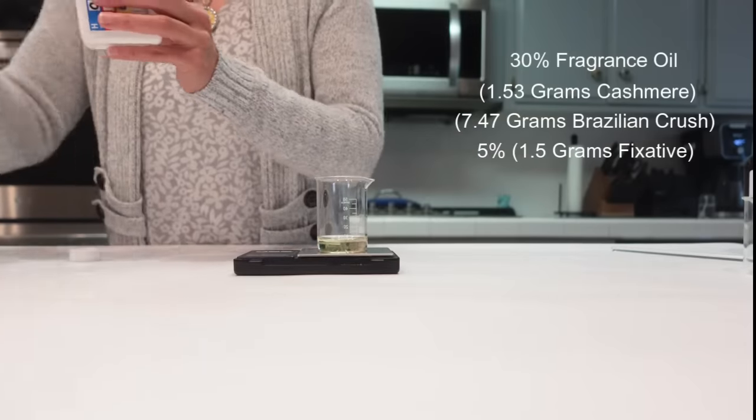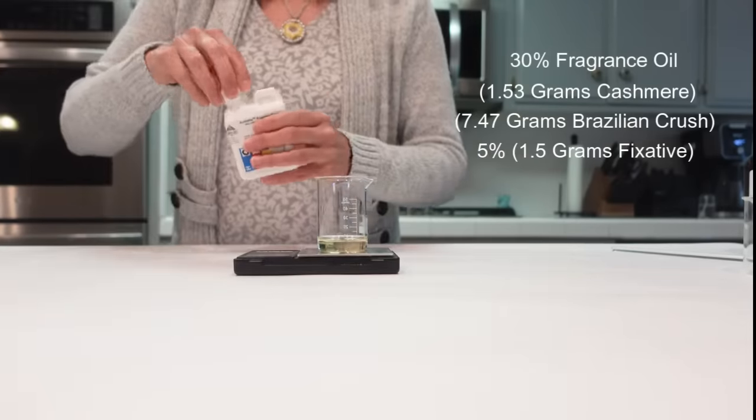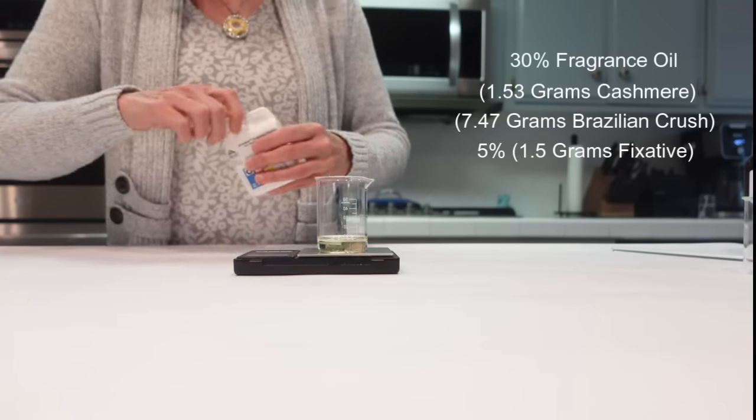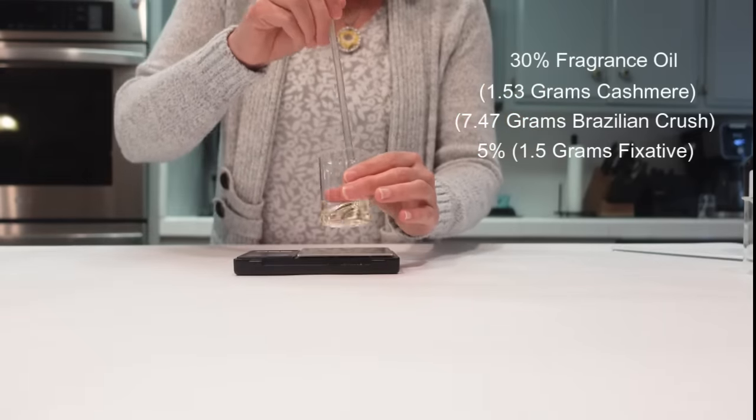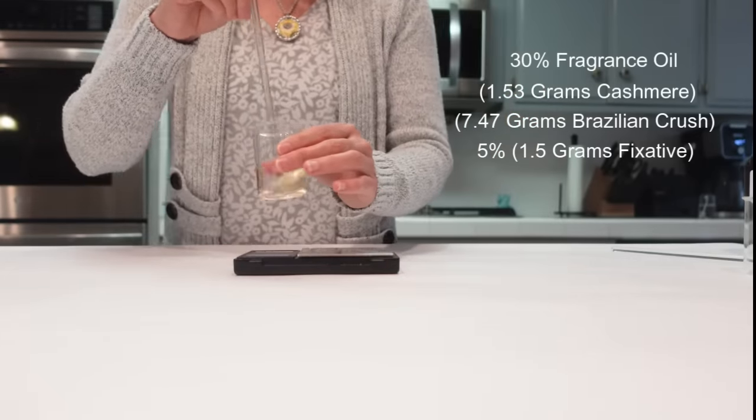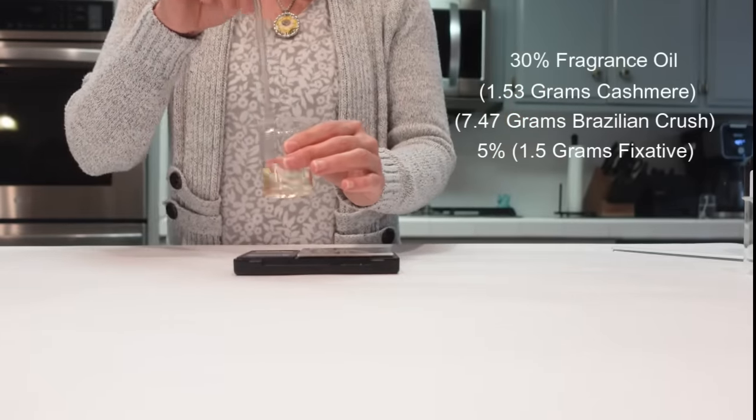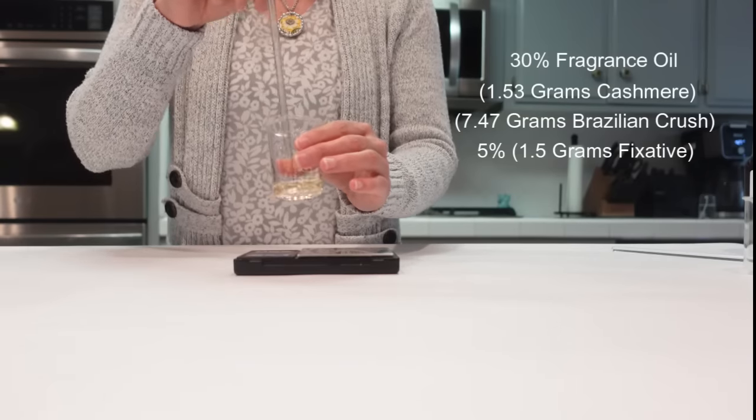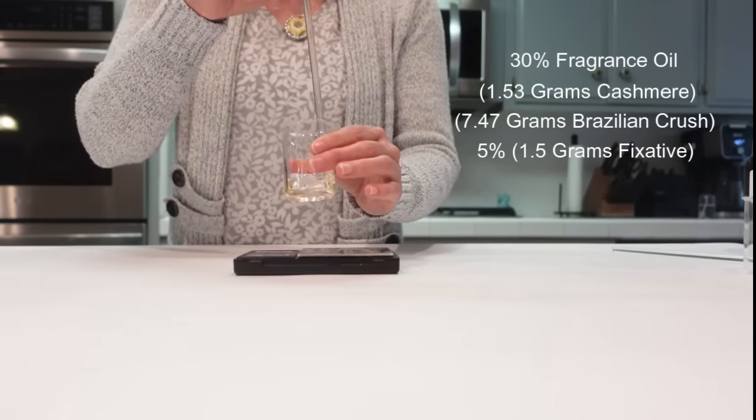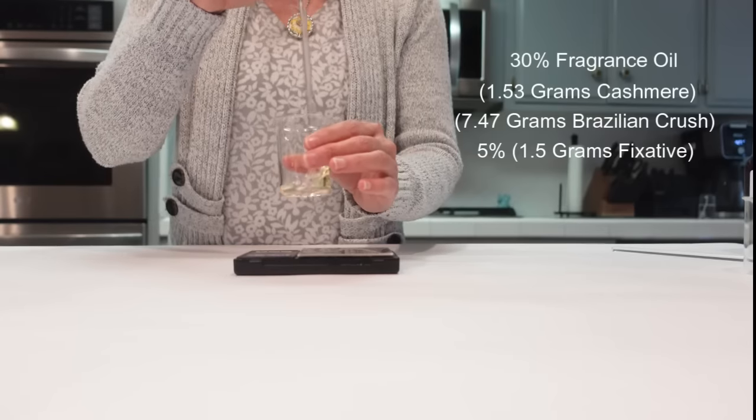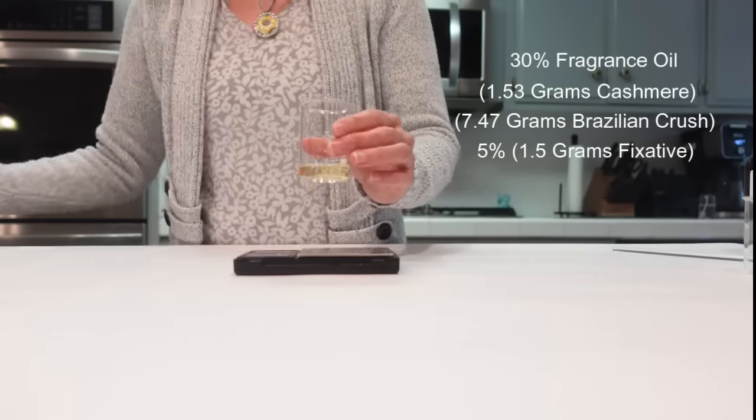Now, before we add in our perfumer's alcohol base, I like to take my fixative and my fragrance oil and give it a good blend. Just to make sure these two things are blended together before we add in the base. All right.